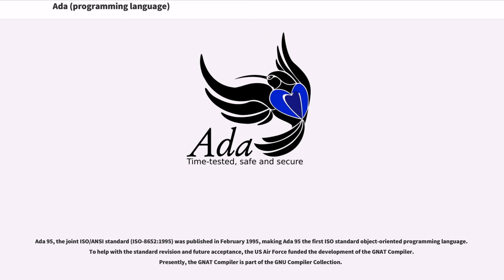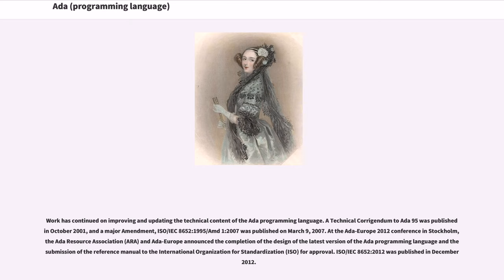To help with the standard revision and future acceptance, the U.S. Air Force funded the development of the GNAT compiler. Presently, the GNAT compiler is part of the GNU Compiler Collection. Work has continued on improving and updating the technical content of the Ada programming language. A technical corrigendum to Ada 95 was published in October 2001, and a major amendment, ISO/IEC 8652:1995/AMD1:2007, was published on March 9, 2007. At the Ada-Europe 2012 conference in Stockholm, the Ada Resource Association (ARA) and Ada-Europe announced completion of the design of the latest version of the Ada programming language and its submission to ISO for approval. ISO/IEC 8652:2012 was published in December 2012.